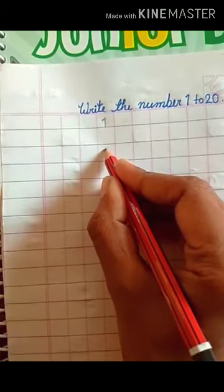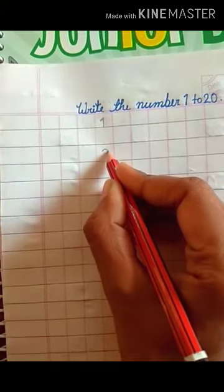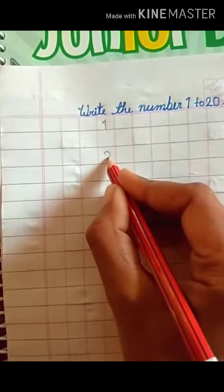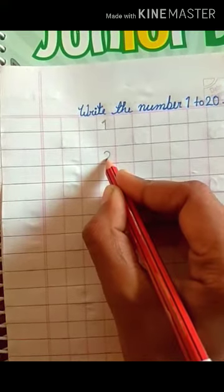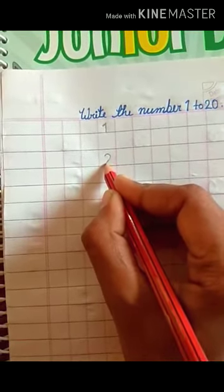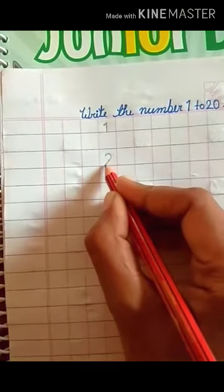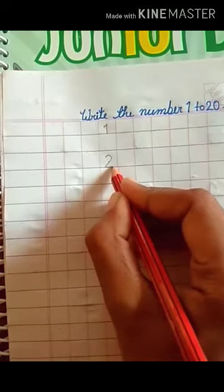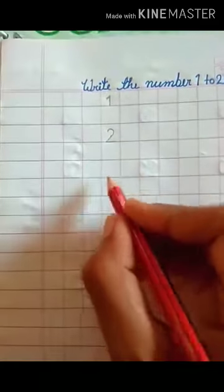Draw right curve, then draw slanting line, then draw slipping line. This is number 2.